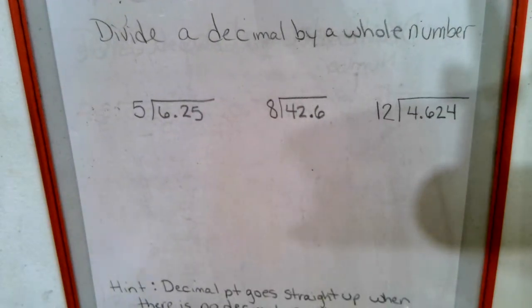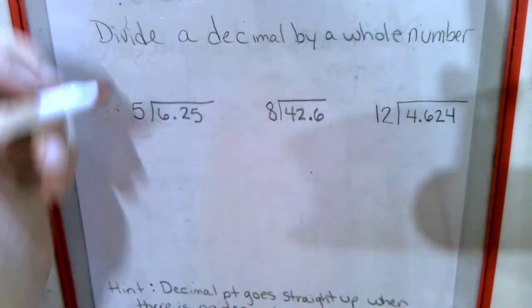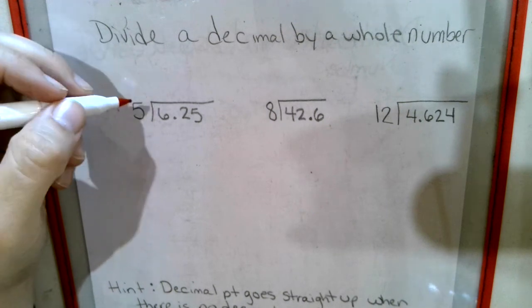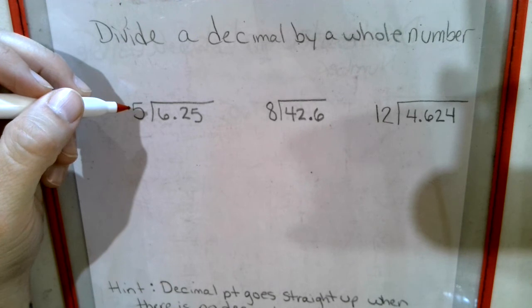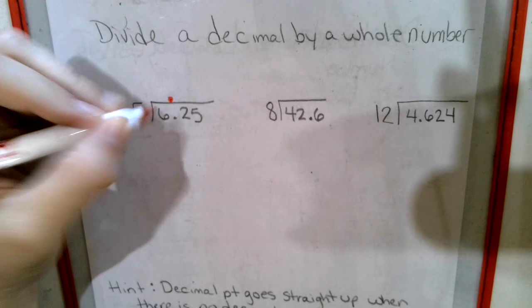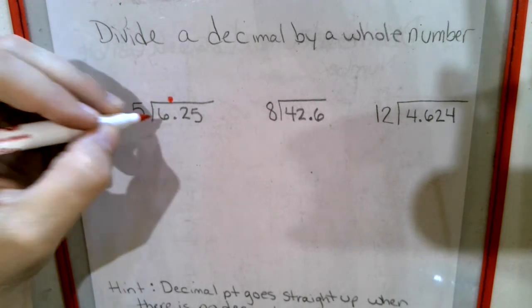Okay, we are going to be dividing decimals by whole numbers. So just to give you a heads up, if there's no decimal on this outside, then all you have to do is raise the decimal point straight up in your answers. It's so important to try to keep the numbers lined up with what you're putting into it.